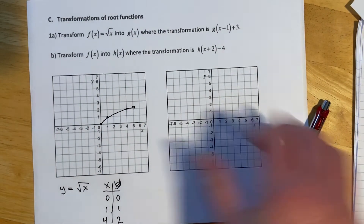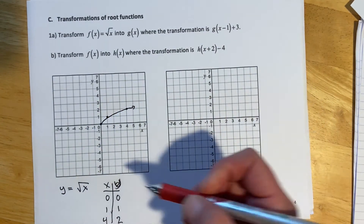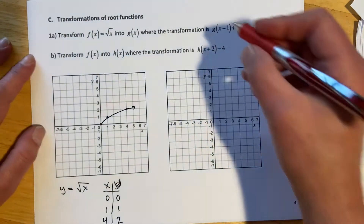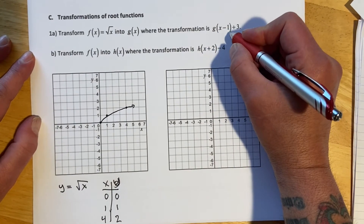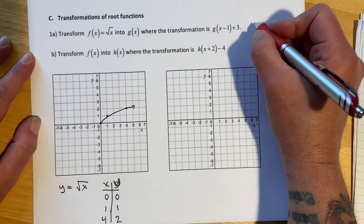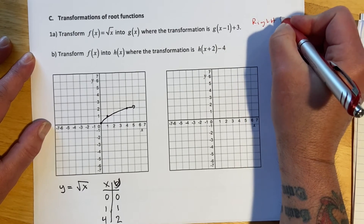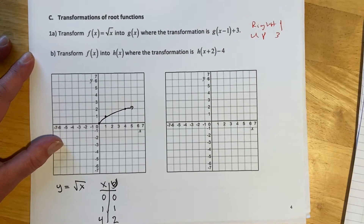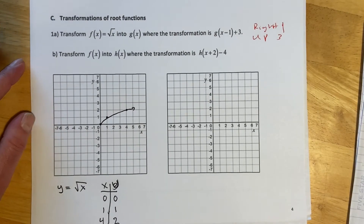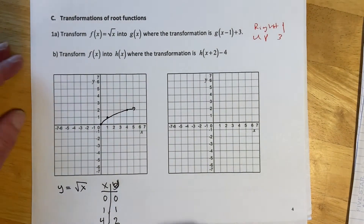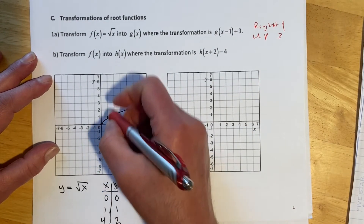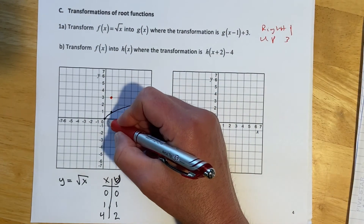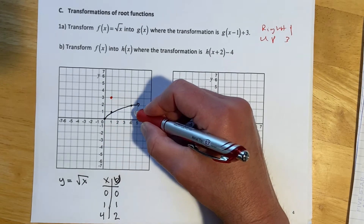It's like the V-shape we had for the absolute value. We're going to do the exact same transformations we did in the last chapter with absolute values — now we're just working with a different picture. This one has a minus 1 on the inside, which is going to go right 1, and a plus 2 on the outside which goes up 3. So we're going to take this picture and move it right 1 and up 3. Right 1 gets us there and up 3 gives my new starting point, then it goes over 1 up 1, and then over 1 up 3 from there.